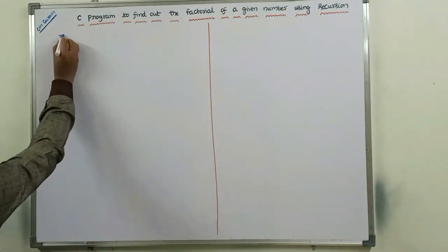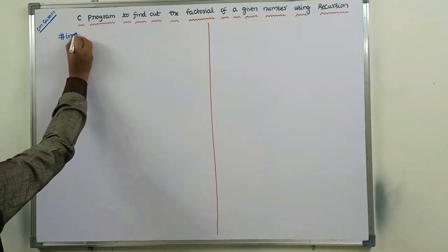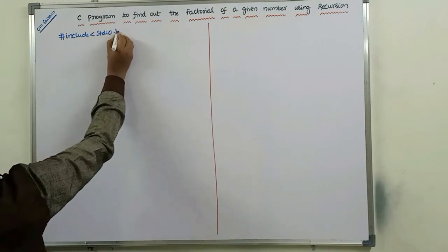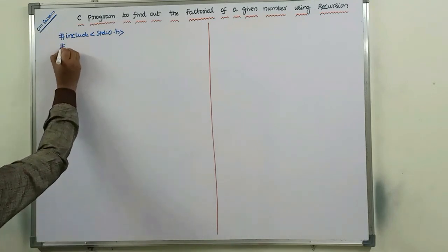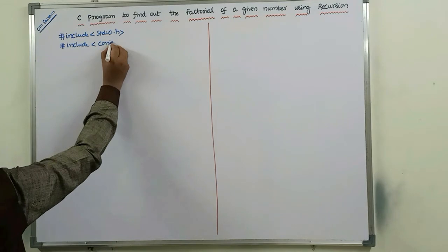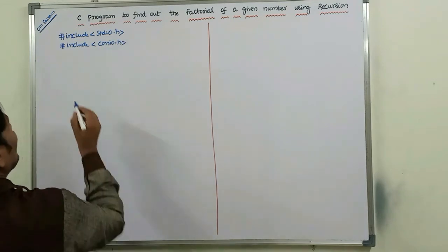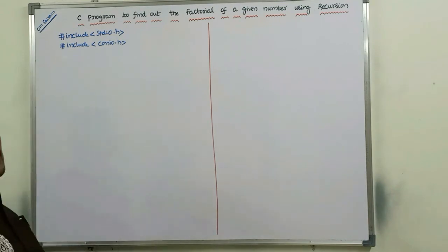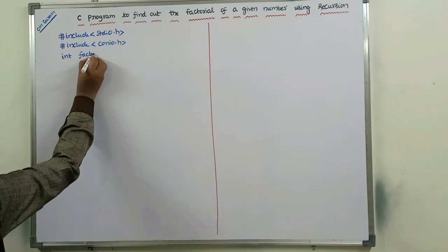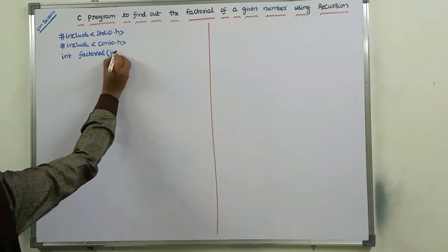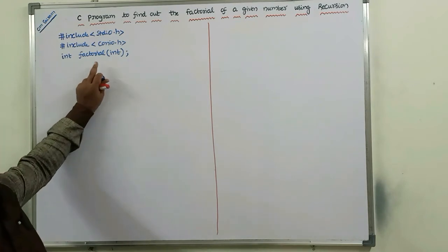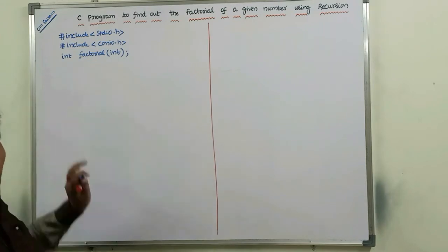First, we have to declare the header files: #include stdio.h — the standard input output header file. The second header file is #include conio.h — the console input output header file. Next, we have to declare the function prototype before the main function: int factorial(int). This line is called the function prototype. It tells the compiler that this function is used in the program below.